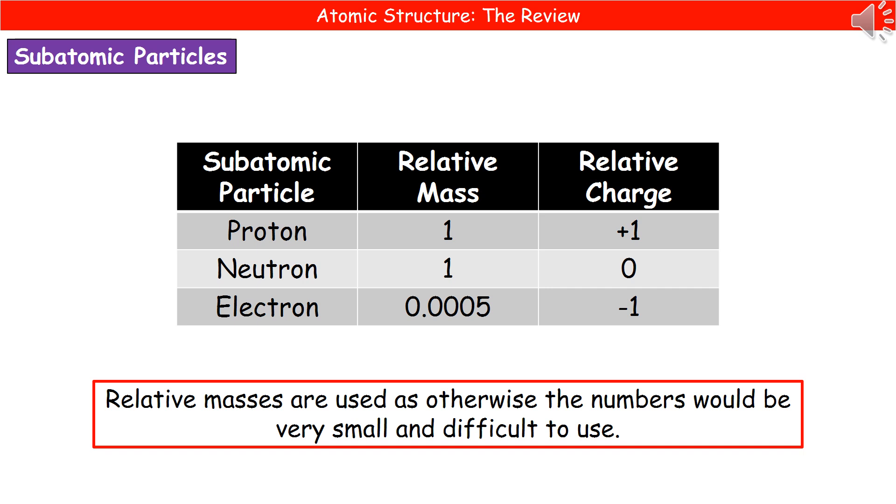Now, we're using this word relative quite a lot because when we're talking about the things that make up an atom, they are absolutely tiny. So if we were to use mass in grams, the number would be so small, it would be utterly ridiculous to try to write down. So we use a relative mass because it gives us nice, simple numbers like one that we can then use.